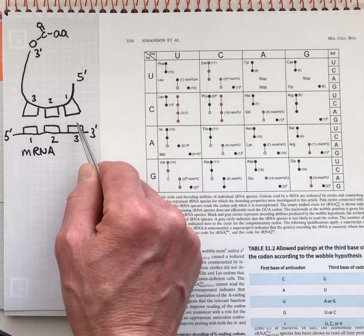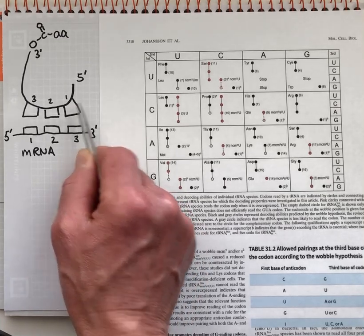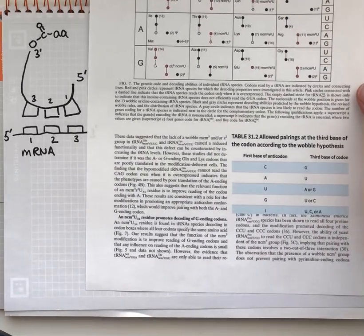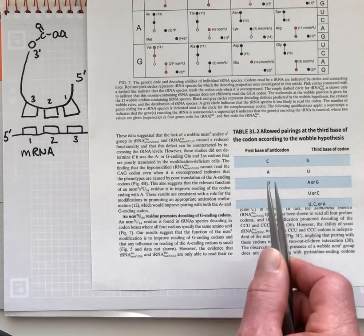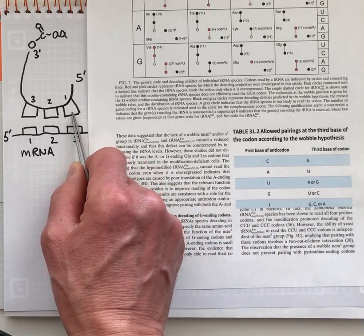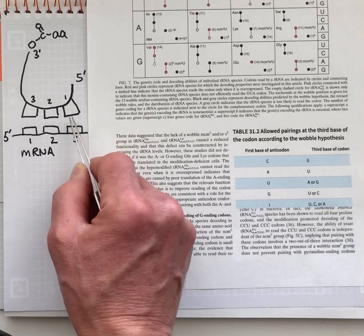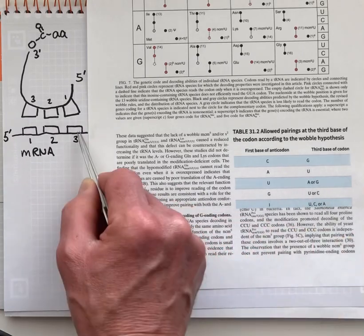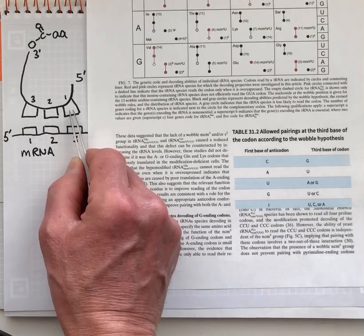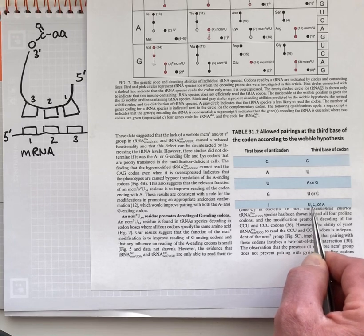But at the third position, the so-called wobble position, things are much more permissive and we can have a single nucleotide at this first anticodon position with a capability of decoding several nucleotides at this third codon position. And the expectations for those wobble pairings are shown in table 31.5. If we have C at this first anticodon position, it should only decode G at this third position. But if we have U at this first anticodon position, according to the wobble hypothesis, we should be able to decode both A or G at this third position. And then, in interesting cases, when the tRNA has an inosine at this first anticodon position, that according to the wobble hypothesis should be able to decode three nucleotides, three bases, U, C or A.